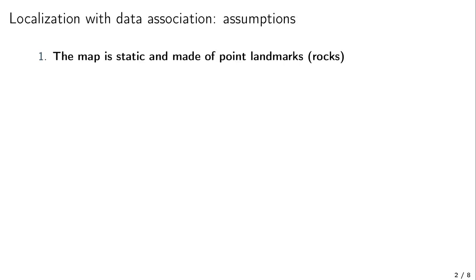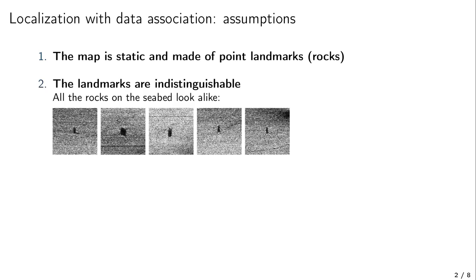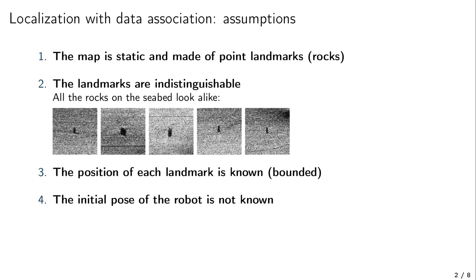So we will consider the following assumptions. First, the map does not evolve with time and is made of points such as rocks. Second, we assume that all the landmarks of the environment look alike. Third, the map of the environment is known with bounded uncertainties, which means that the position of each landmark is available in a box. And finally, because the position of the robot may be lost during the diving phase, we consider that its initial position is unknown, which means that our localization algorithm will have to behave without initial conditions.